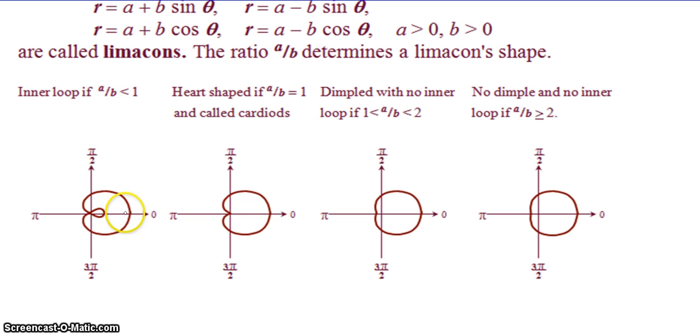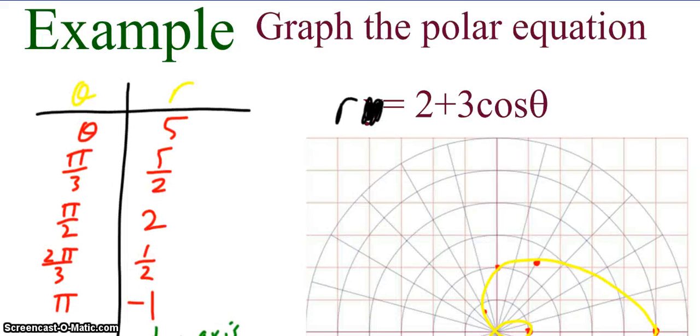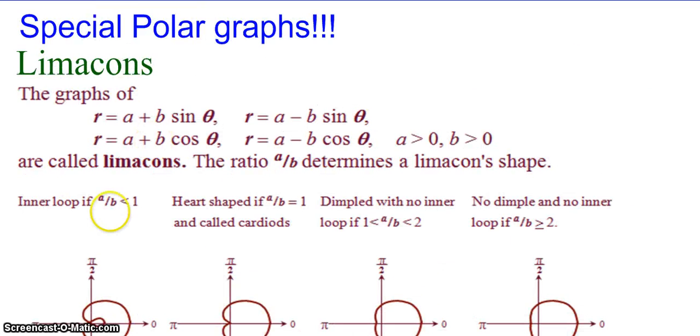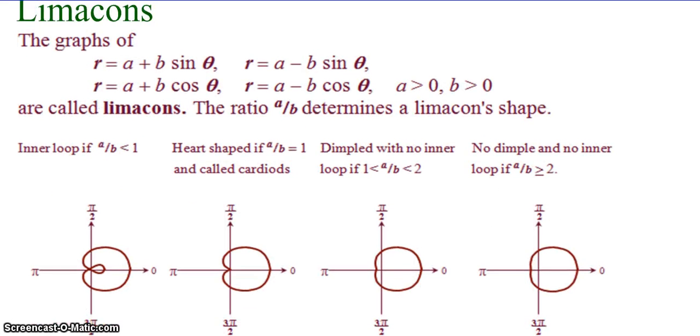The ratio of a over b determines the actual shape that we're going to end up with. So, we have four different scenarios, basically. If a over b is less than 1, then we are going to have this inner loop shape. And we saw that a couple of slides ago when we graphed 2 plus 3 cosine theta. So, here's that inner loop shape for the limacon. And in that case, the a over b was less than 1. If a over b equals 1, we're going to get this heart shape. This is called a cardioid, where it does not form a loop. It forms an indentation with a sharp turn. If a over b is between 1 and 2, we're going to get kind of a dimple. And if a over b is greater than or equal to 2, then it's going to be almost flat. It's not exactly flat, but it's almost flat.